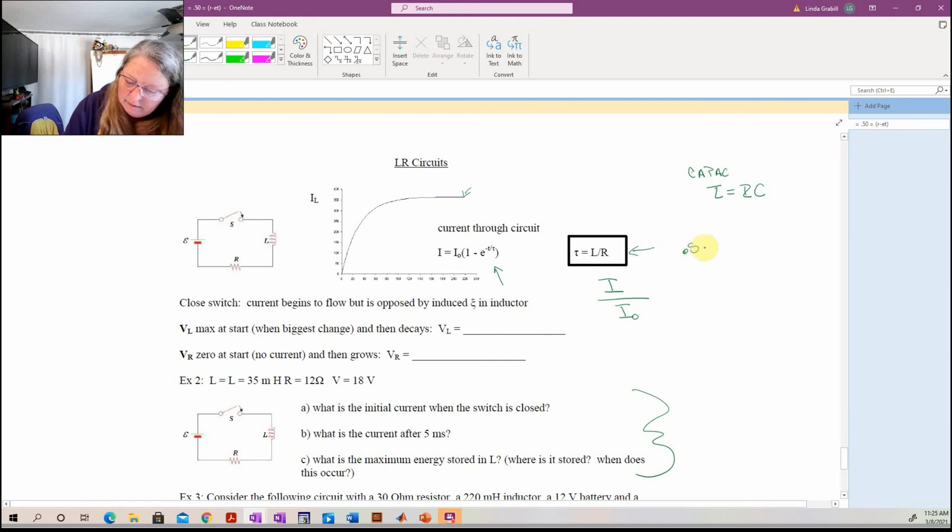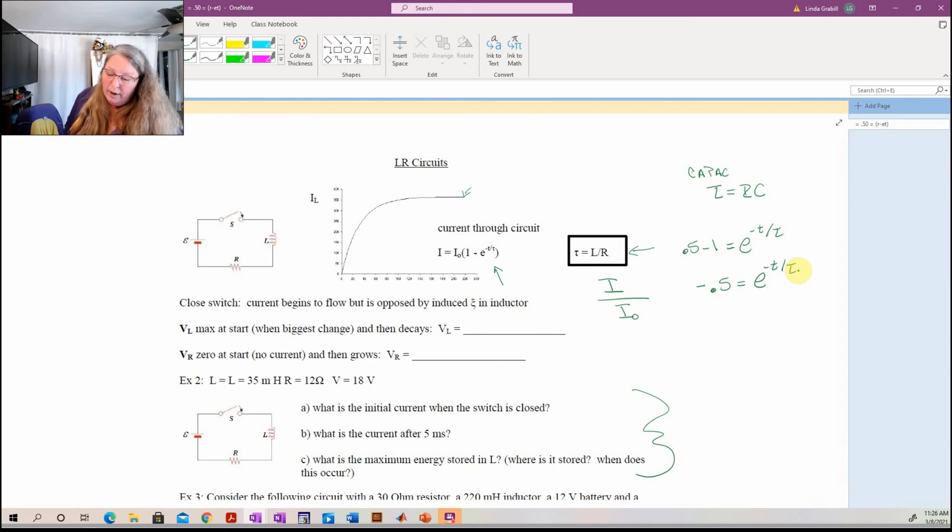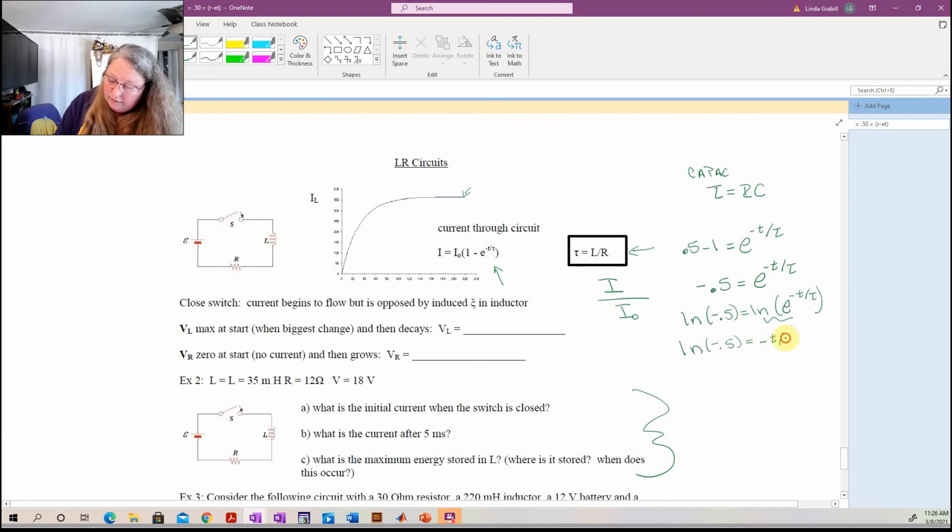All right. So we have 0.5 minus 1 equals e to the negative t over tau. So this part of the equation stays the same. It's just how we calculate tau that's different. And the one thing I want to emphasize here is how do we solve for our time. I know that there were some panicked faces. So I just want to take a second and talk about that to undo an exponent. So if I have an e to that, the way I undo that is take the natural log of both sides. So I take ln of negative 0.5 times ln of e to the negative t over tau. It's kind of like taking the arc sine of something to figure out what the angle is. ln does the same thing. So this piece there goes away and I end up with ln of negative 0.5 equals negative t over tau.